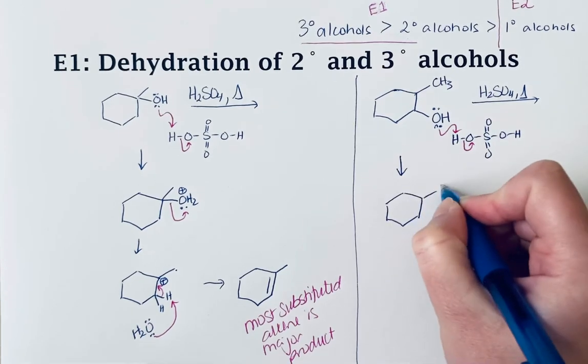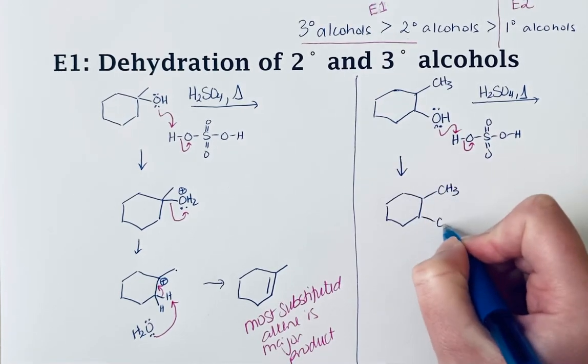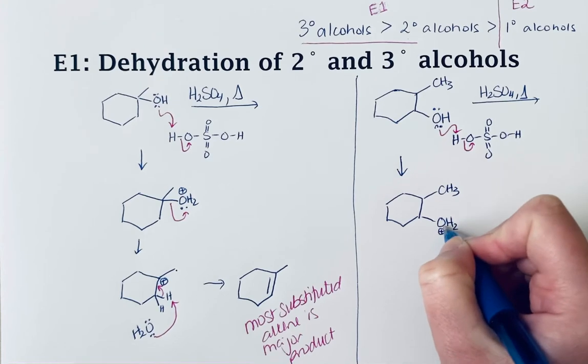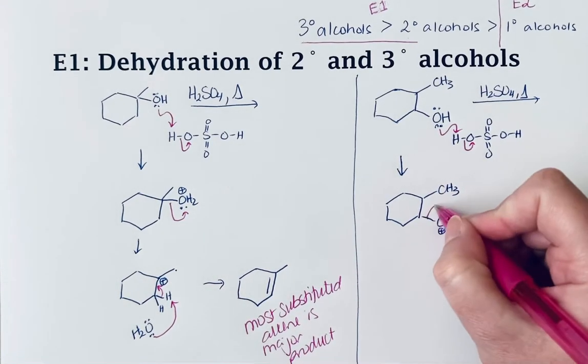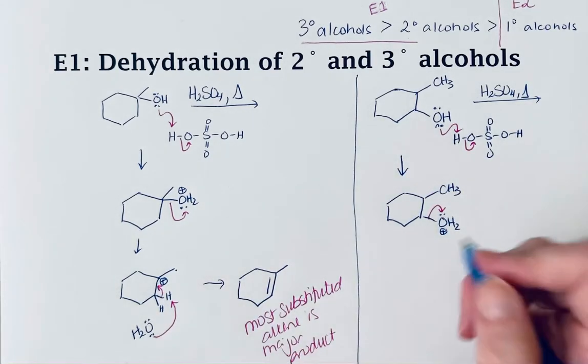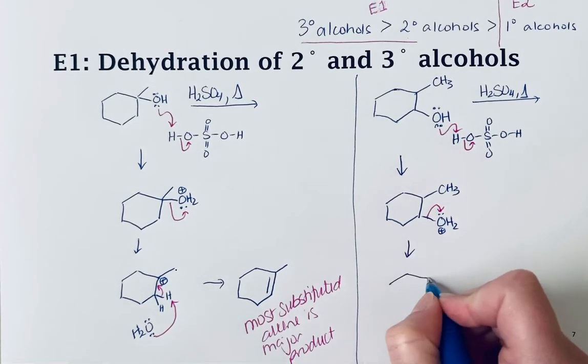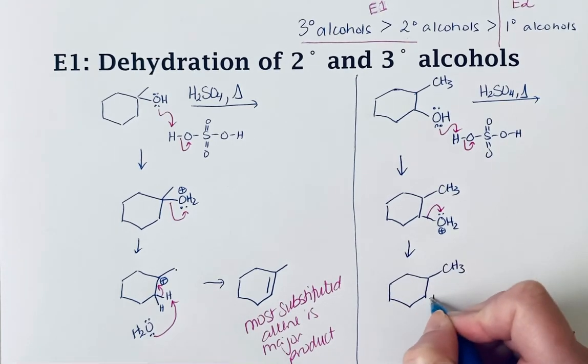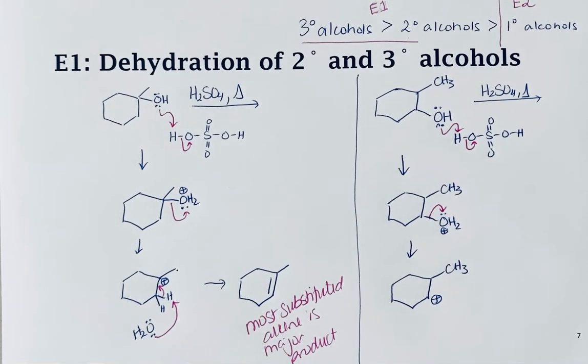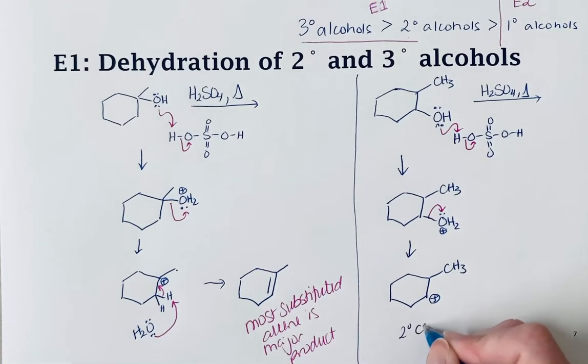Now that it's a good leaving group, it's going to leave, and we'll get a carbocation. Here is the initial secondary carbocation that is formed in this reaction.